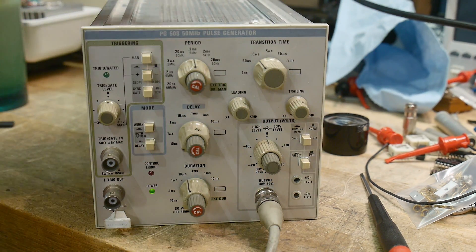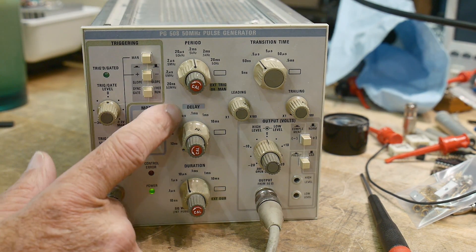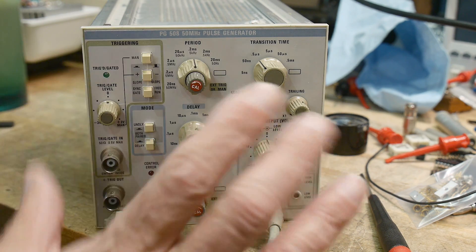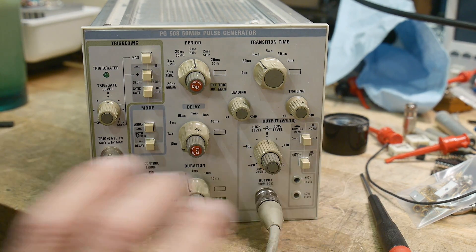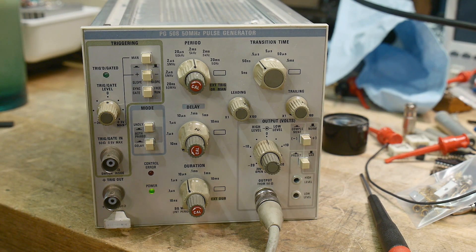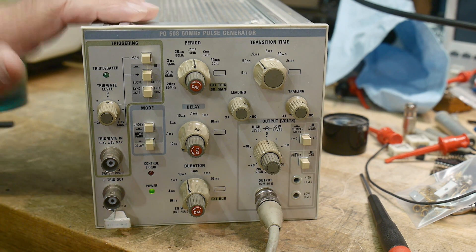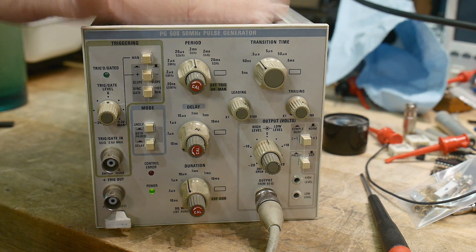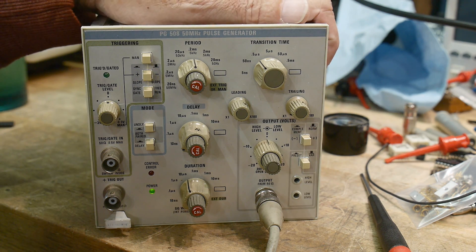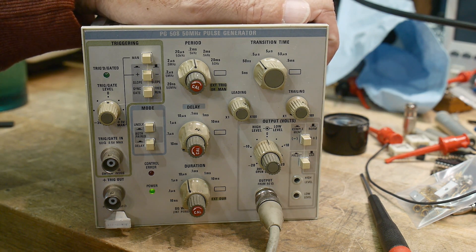So I got all three things. I got the 503 mainframe, this pulse generator, and the function generator all for $120. Which was a really good deal. So that's why I have it. But I think this is one of my favorite plug-ins now for the plug-in series that I've been doing.